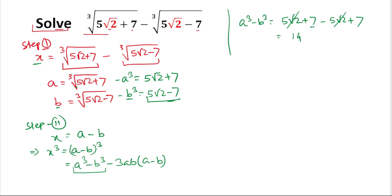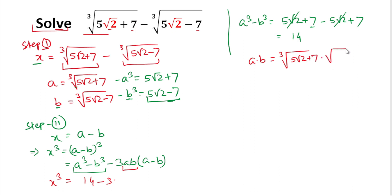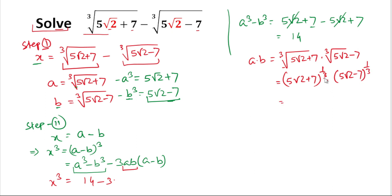Now we put the value of a³ − b³ = 14 into the formula: x³ = 14 − 3·ab·(a − b). We need to calculate ab. We have a·b = ∛(5√2 + 7) · ∛(5√2 − 7), which equals [(5√2 + 7)(5√2 − 7)]^(1/3), since the exponents are the same.